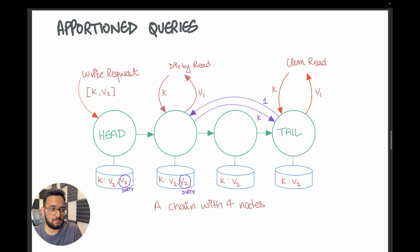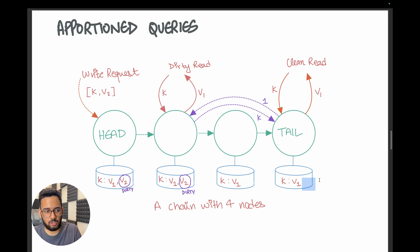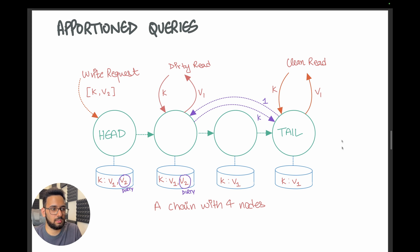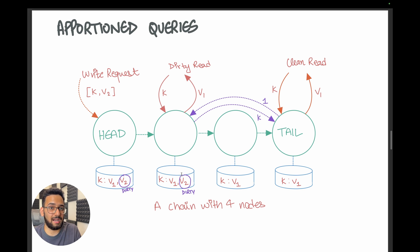Once the acknowledgement is sent, the latest version is also marked as clean. When the acknowledgement message for a particular version comes in — say the tail applies the V2 update — the other nodes discard all prior copies that existed before V2 from their storage to save space. Now let's see how read requests are served. Let's say we have update V2, but it is only applied up to the second node in the chain — the tail has not yet received this update, so it is marked as dirty on whichever nodes it is present on.